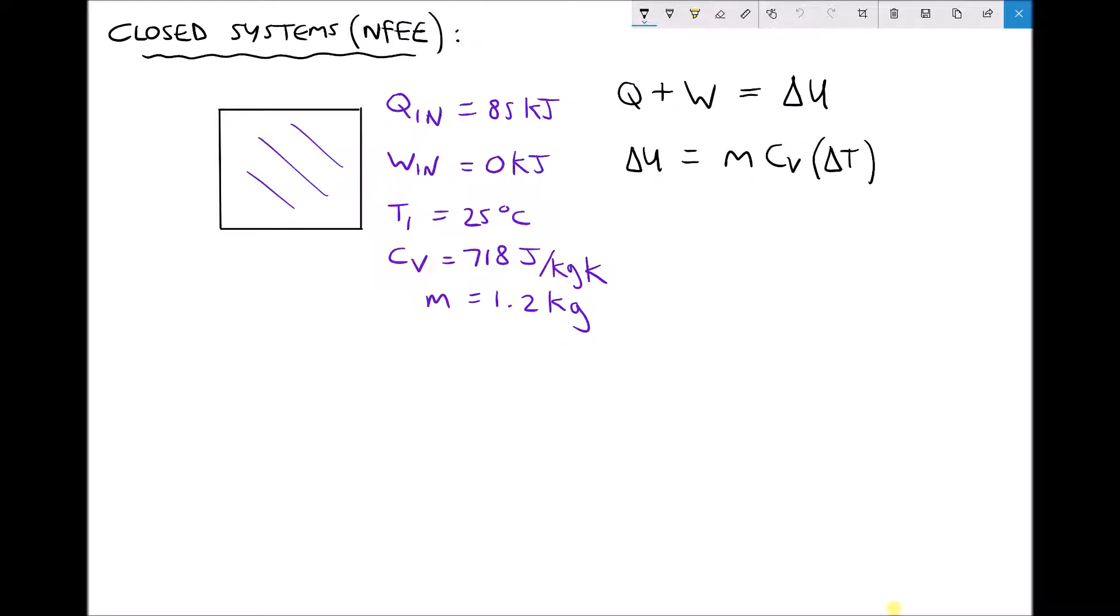We're assuming that the temperature of the fluid is 25 degrees C and we have a specific heat capacity at constant volume of 718 joules per kilogram Kelvin. That value is for air, so within our container we have air with a mass of 1.2 kilograms.